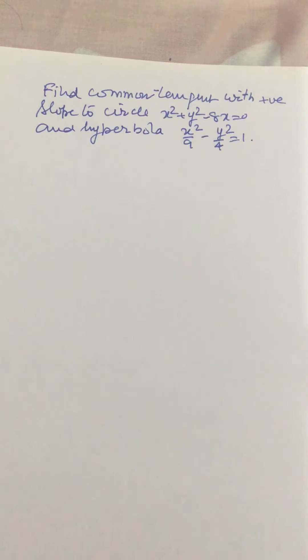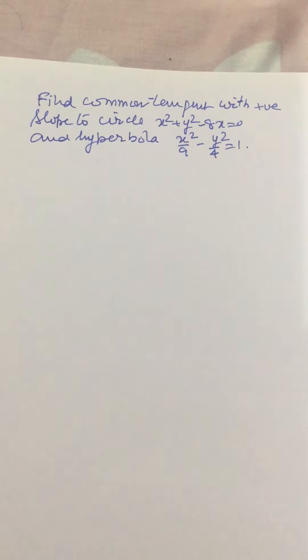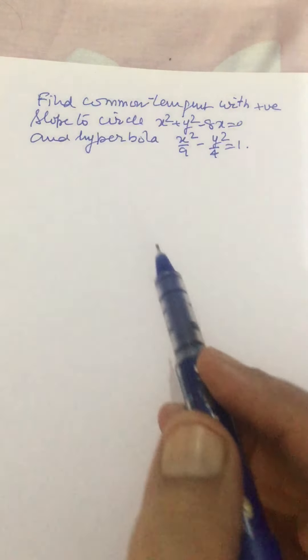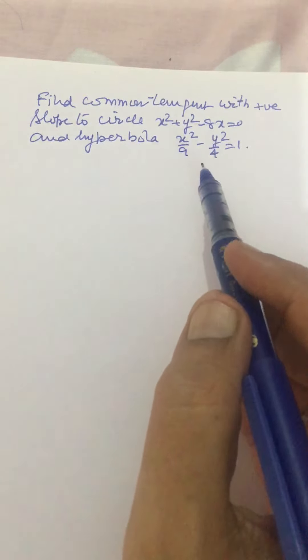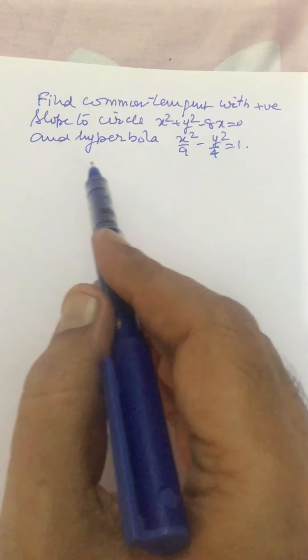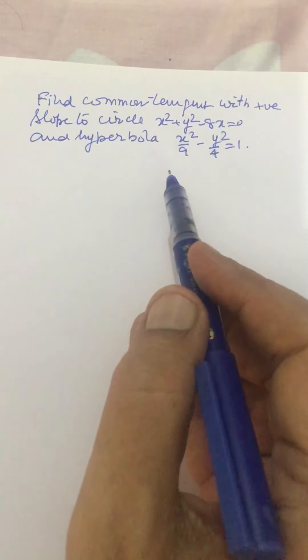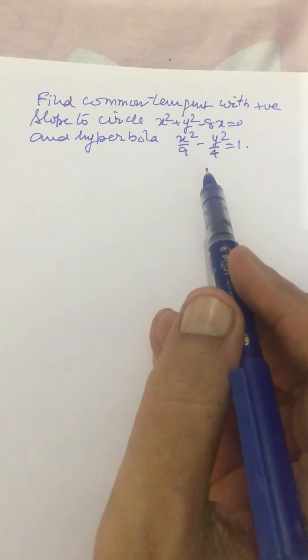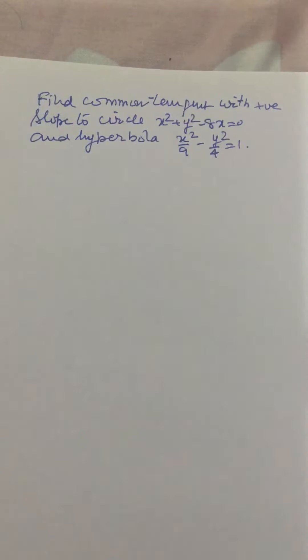Dear friends, welcome to my channel. In this video we have to find out the common tangent with positive slope to the circle x² + y² - 8x = 0 and the hyperbola x²/9 - y²/4 = 1.